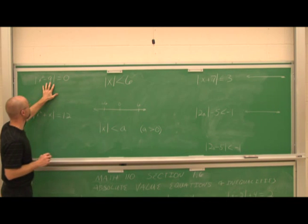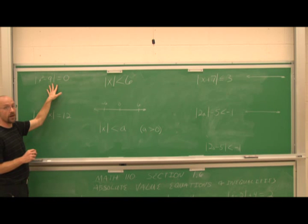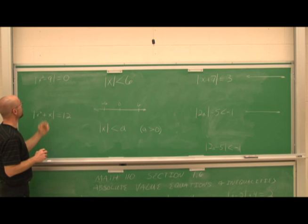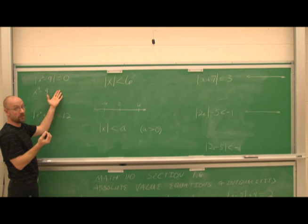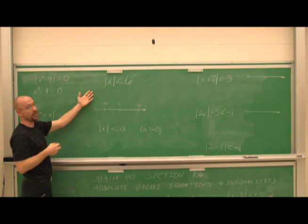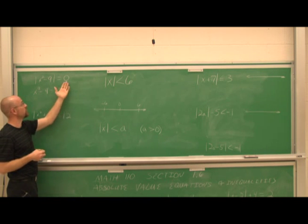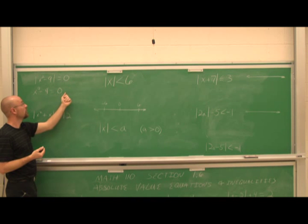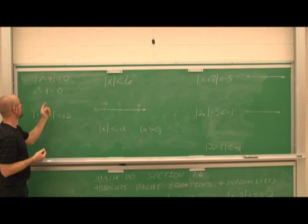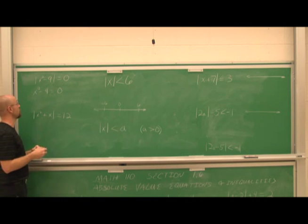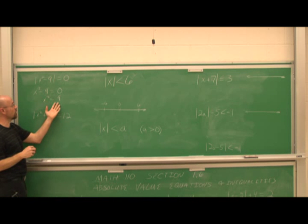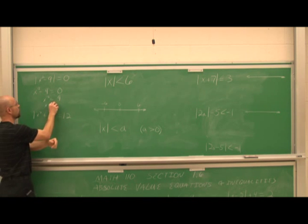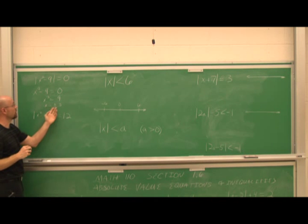Let's do another example. If we look at this, our absolute value is already isolated — it's set equal to 0. If I write two equations, I get x squared minus 9 equals positive 0 and x squared minus 9 equals negative 0. Well, they're actually the same equation, because 0 is the one value that's neither positive nor negative. So in this case, I'm only looking for one equation. Adding 9 to both sides and using the square root method: x equals plus or minus the square root of 9, which is 3. So x equals plus or minus 3.